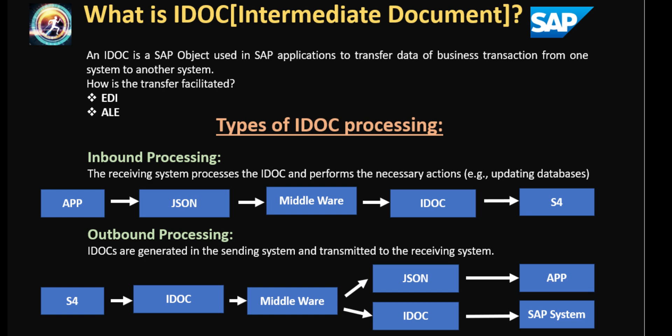It could be from one SAP system to another SAP system, from an SAP system to a third party system, or from a third party system to an SAP system. How is this transfer facilitated? IDOC primarily uses two types of interfaces: EDI interface and ALE interface. EDI is Electronic Data Interchange and ALE is Application Link Enabling. EDI is used for transfer between an SAP system and a third party system, while ALE is used for transfer between one SAP system and another SAP system.